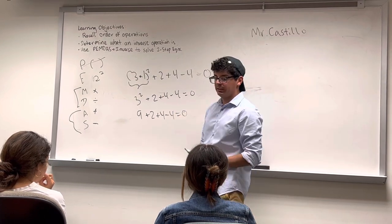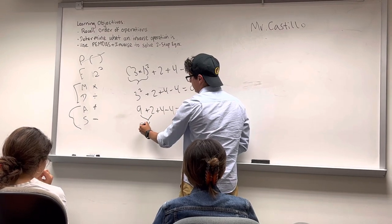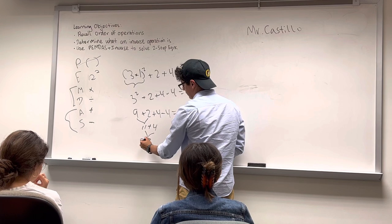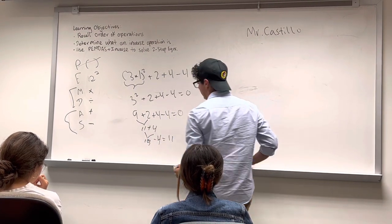The same applies for addition and subtraction. We just follow from left to right. So 9 plus 2 is 11, then we have plus 4 is 15, and then we have minus 4 is 11, and that's how it works.